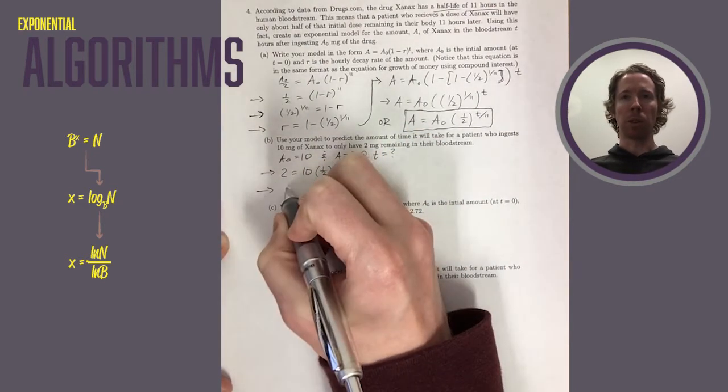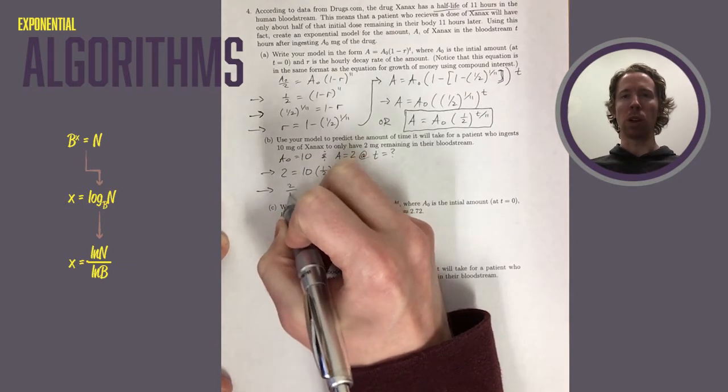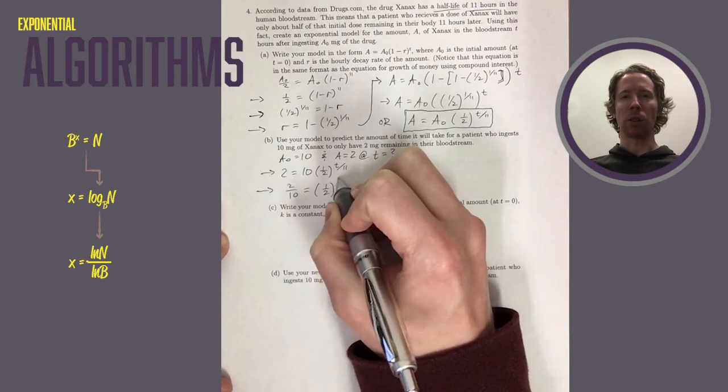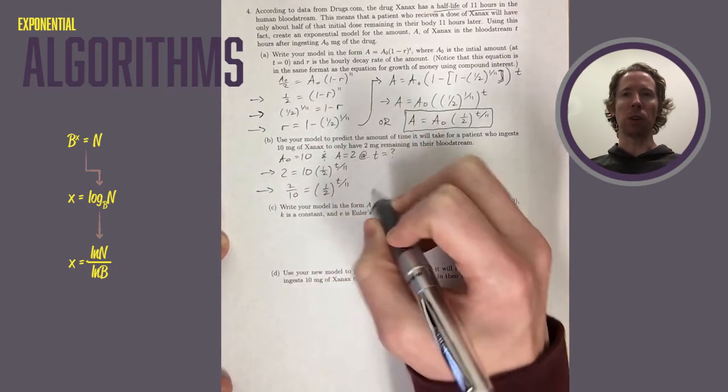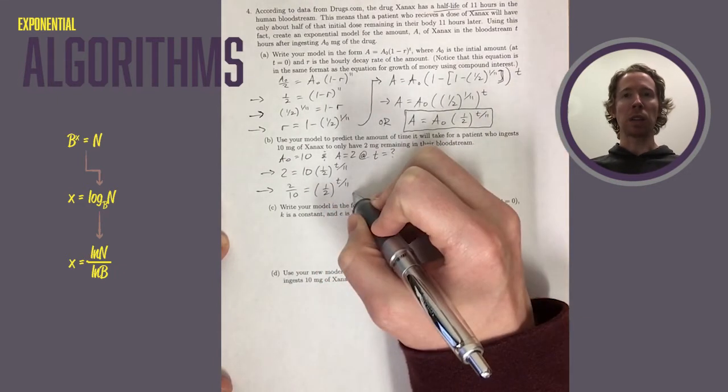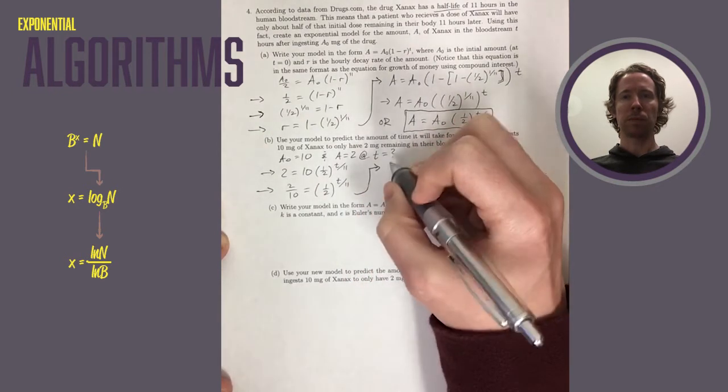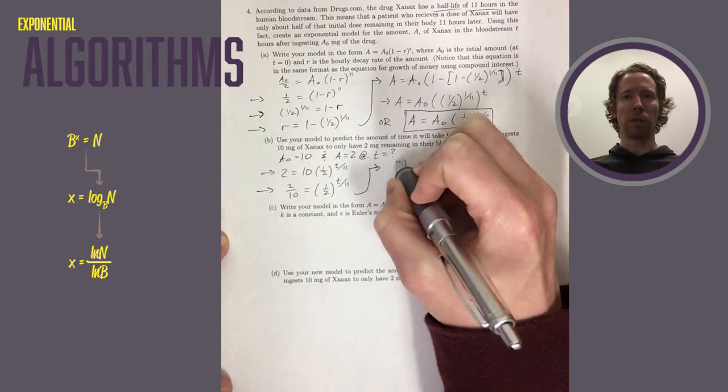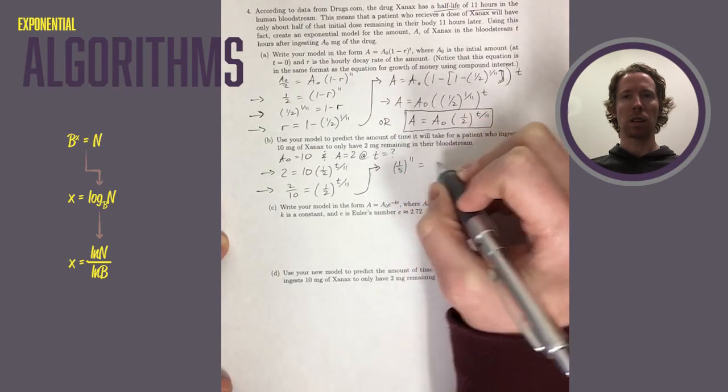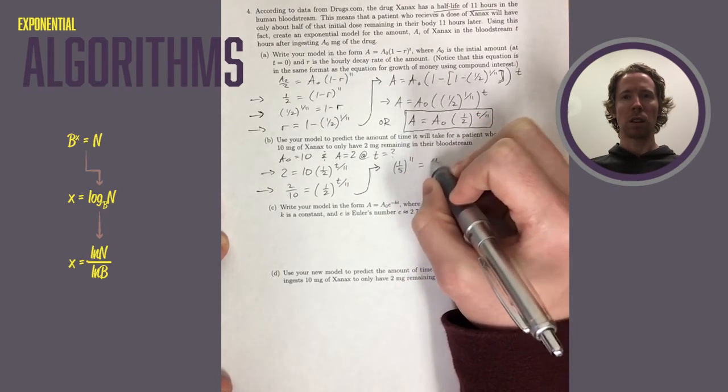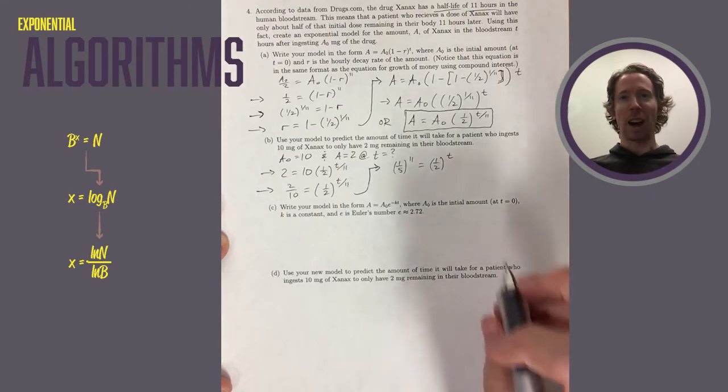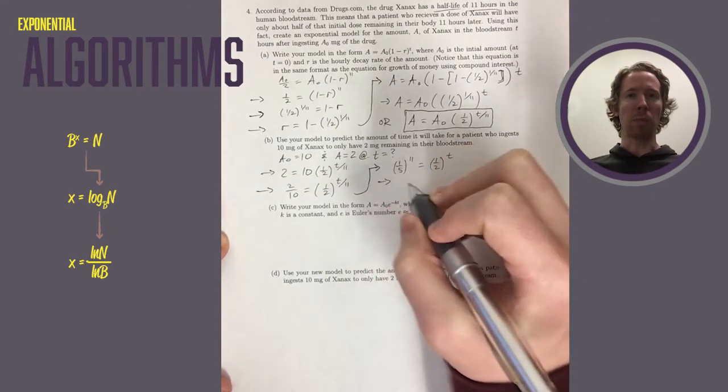Since T is in the exponent, I'm going to use an algorithm for an exponential equation. Divide both sides by 10, so that it says a constant equals a base raised to the exponent. Take the natural log of both sides after that. 2 tenths is 1 fifth. All right, I didn't do exactly what I said. Instead of doing what I said, I raised both sides to the 11th power.